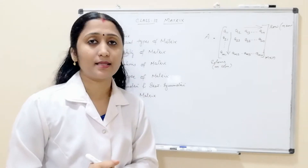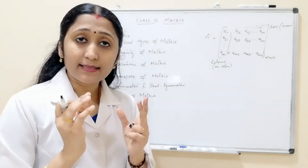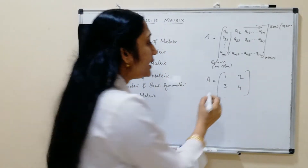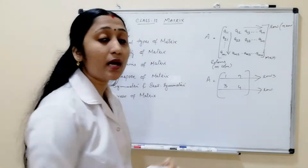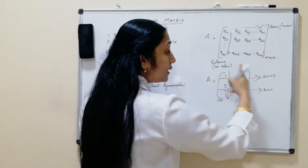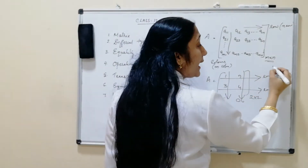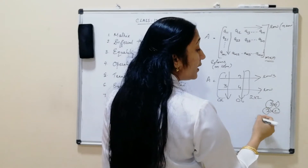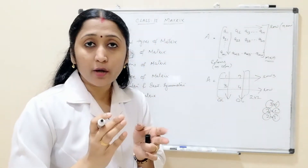Let us start with different types of matrix. Here matrix A is [1, 2; 3, 4]. Look at this matrix — it has two rows and two columns, so this is called a 2×2 matrix. For a 3×1 matrix: three columns and one row. For a 2×3 matrix: two columns and three rows. So m denotes columns and n denotes rows in the order m×n.